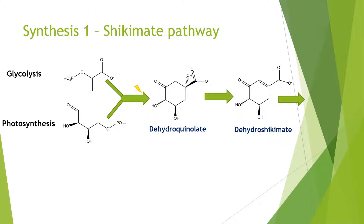I'm not going to go through the whole shikimate pathway here, as that's kind of a video by itself and there have been many videos on it. But I'll give a brief overview. Initially, it involves the creation of a seven-carbon sugar, which then cyclizes and is converted into a carbon-only ring. I think this conversion into a carbon-only ring is quite a cool step, so I've put a little lightning bolt beside it — we'll be going back to it later to look at what chemistry is going on.